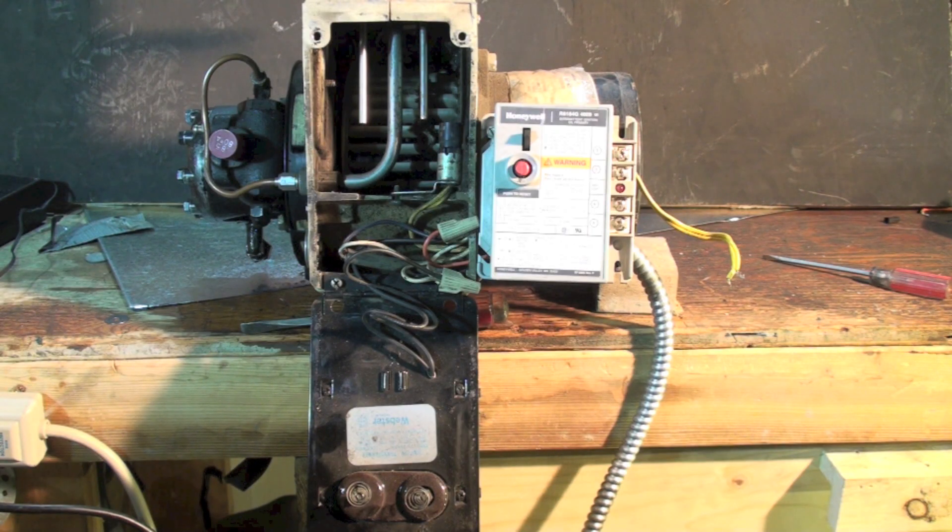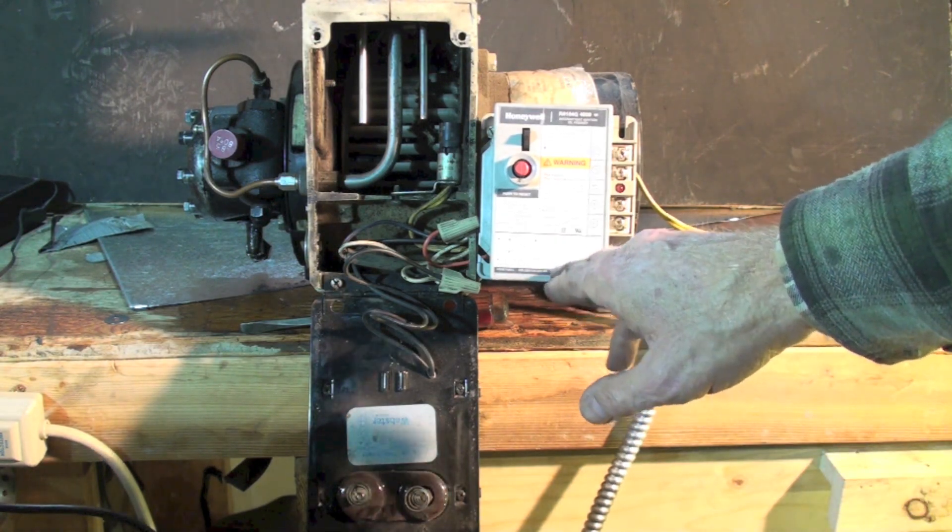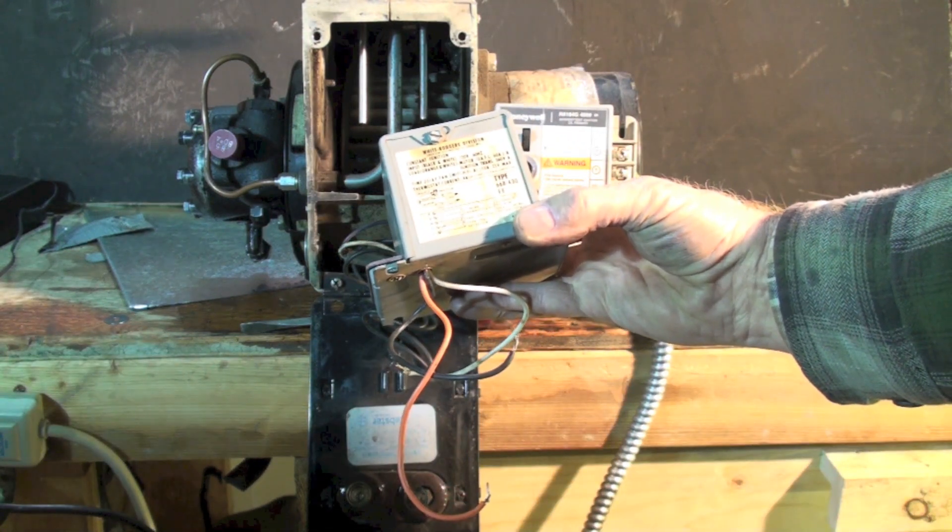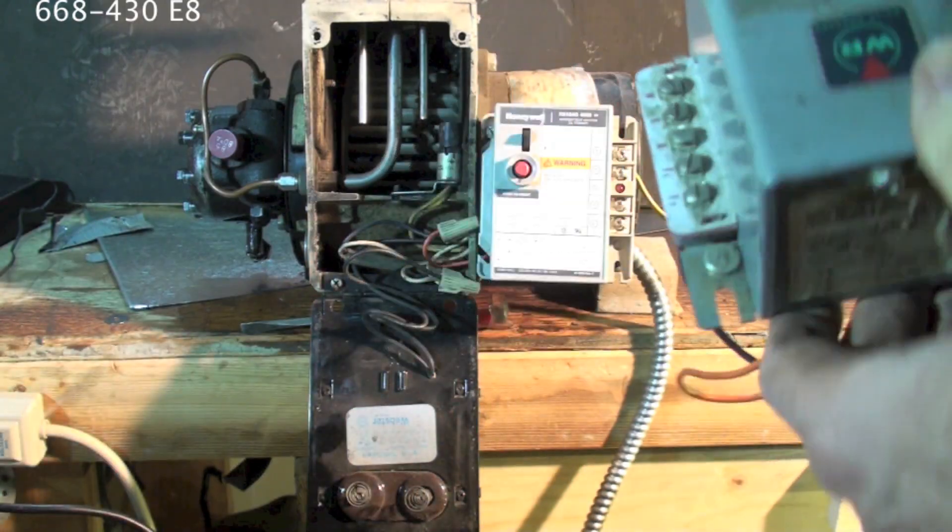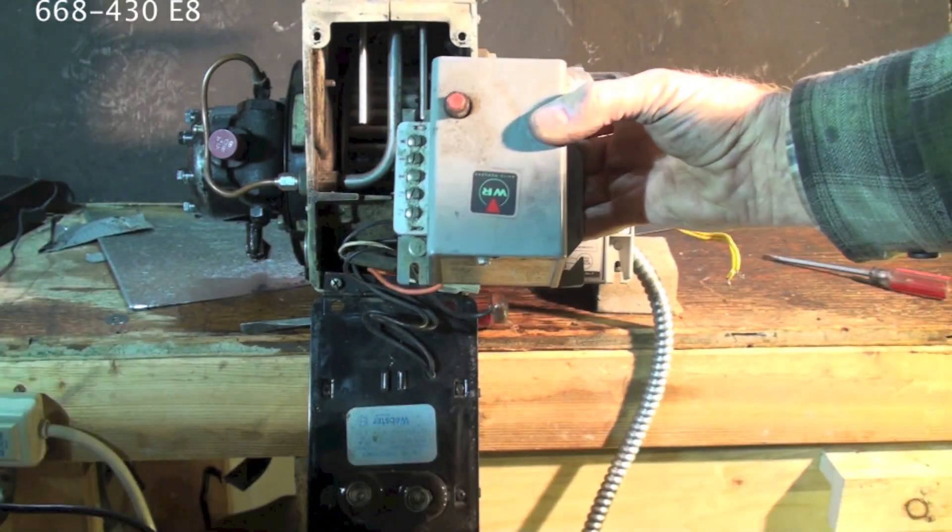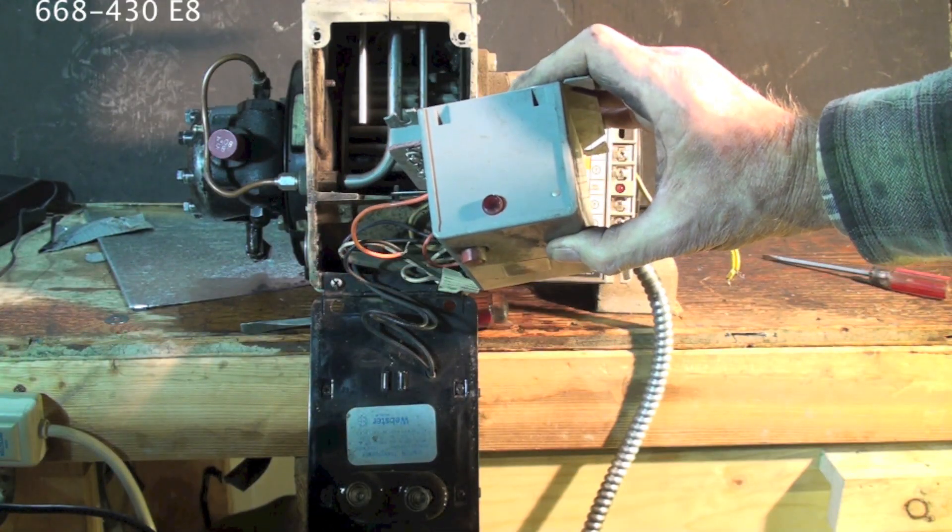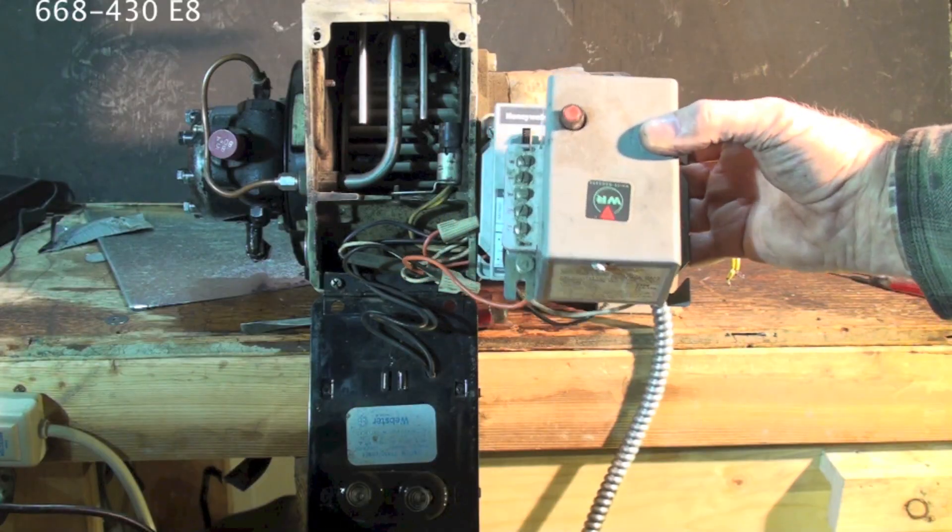So I'm going to show you another control here that is a White Rogers. Now remember, there is a wiring diagram on these two. This is a White Rogers 668-430 E8. It's pretty much the same thing as the Honeywell. It does have a red light on it that shows when it's kicked off. It doesn't have the manual shutdown, but it's got the button there. The biggest difference, well, let's take a look at the backside.